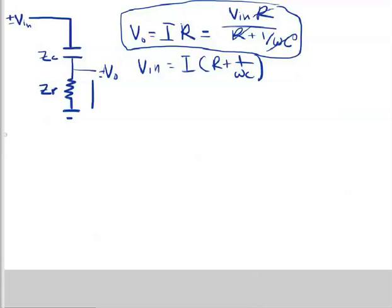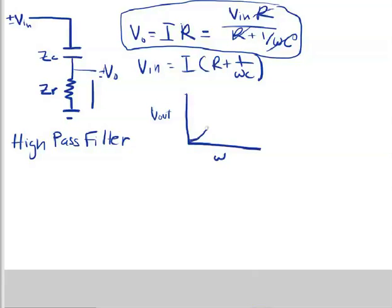This configuration is known as a high-pass filter. And the high-pass filter discriminates against low frequencies and lets the higher ones through. And again, we can draw this with a simple graph, ω and V_out, where for low frequencies, V_out is 0, and for higher frequencies, V_out approaches V_in.